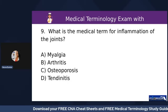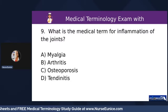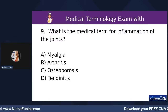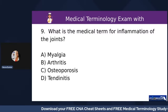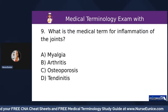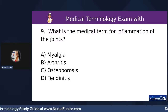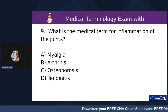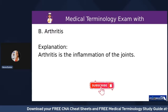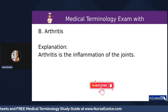Number nine: what is the medical term for inflammation of the joints? A) myalgia, B) arthritis, C) osteoporosis, or D) tendonitis. Remember, anytime you see the prefix 'A-R-T-H' in front of a word, it refers to joints. Arthritis is inflammation of the joints. Keep those patients moving — that will help decrease their pain and improve their quality of life.